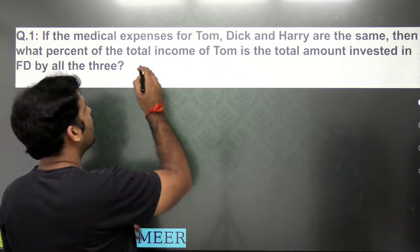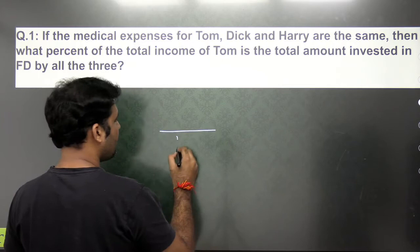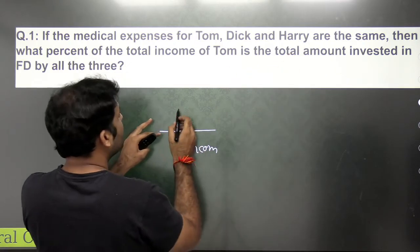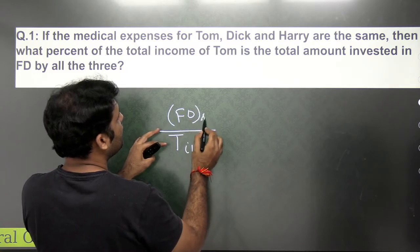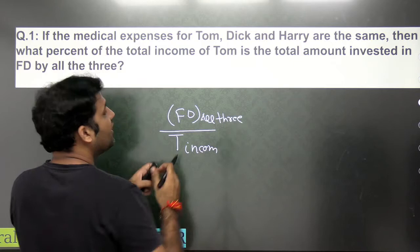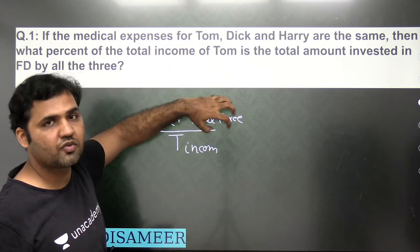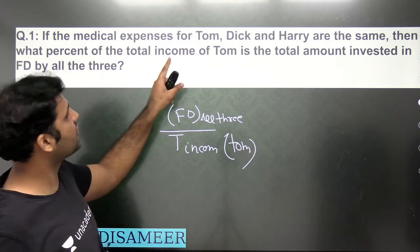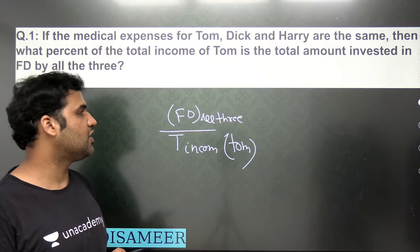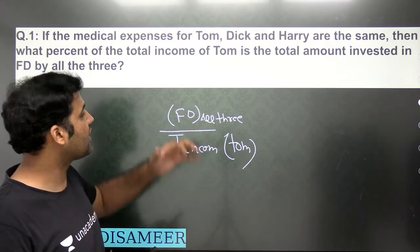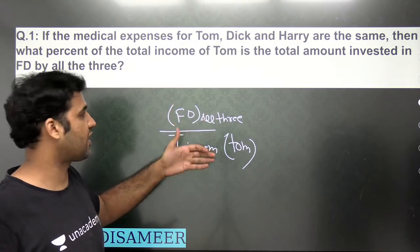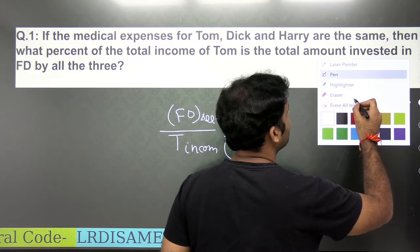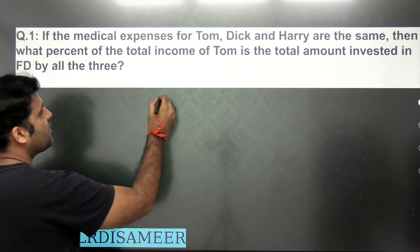What we need to find is: the total amount invested in FD by all three of them is what percentage of the total income of Tom? That is what we are supposed to find out. The first thing you need to clarify is what exactly you are going to calculate. Let's use the given information — Tom, Dick and Harry — and apply it step by step.